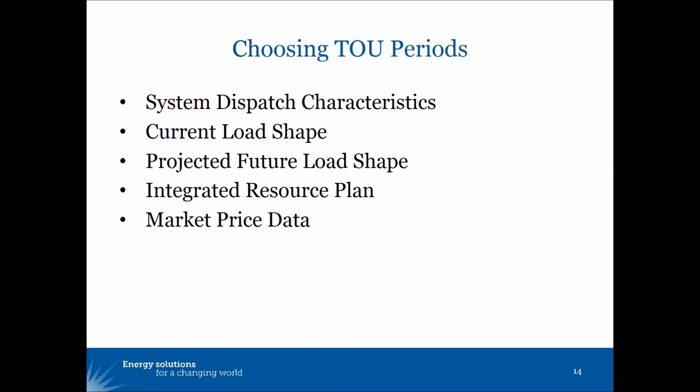The next topic is how to choose the TOU periods in designing a TOU rate. There are a lot of different things that can go into choosing what the on-peak, mid-peak, and off-peak periods should be. Some utilities look strictly at current system dispatch characteristics — during what hours are high-cost power plants dispatched. Some might look at the current load shape of the utility.